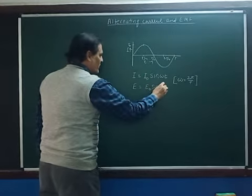We represent this current as I = I₀ cos ωt, and similarly E = E₀ cos ωt.